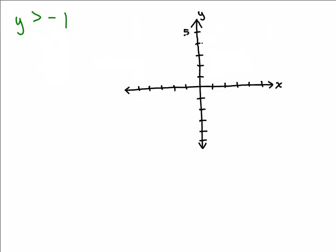So here's the first problem, y is greater than negative 1. The first thing we want to do is graph the line, y equals negative 1 and decide whether to make a solid line or a dotted line. So we're going to graph y equals negative 1 and now, is that going to be a solution, y equals negative 1? No, because there's no equal sign here. It's strictly y is greater than negative 1. So use a dotted line because it's not part of the solution.